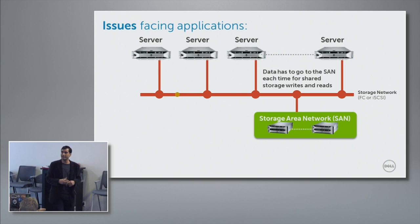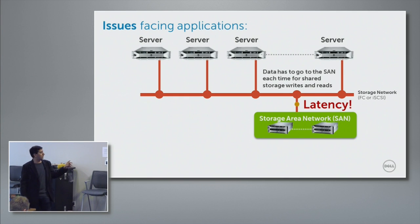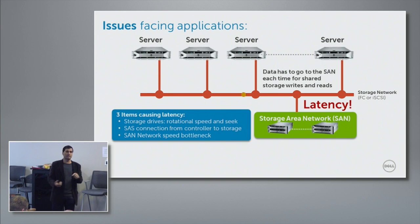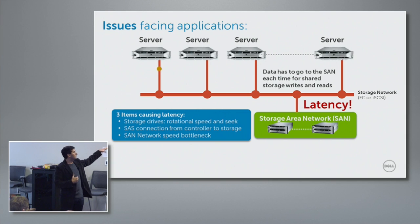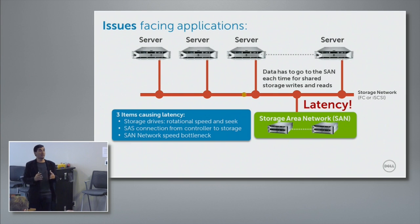Why is data access slow? Especially in a SAN environment, you've got many servers running applications accessing back-end SAN storage, and data traversing from storage to servers is slow. The latency comes from several factors: rotating drives in the storage itself, the SAS connectivity between the controller and the storage array, and the SAN fabric — where thousands of users hitting those servers are all getting their data over one SAN network.